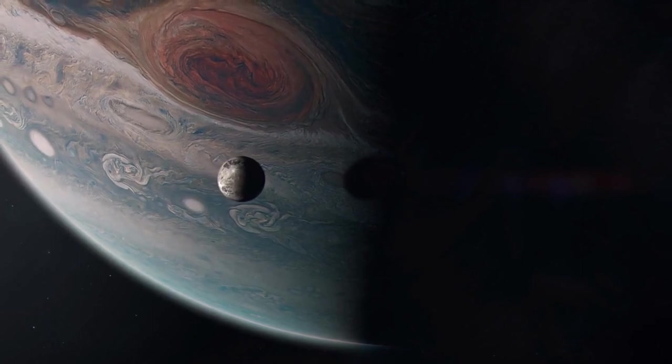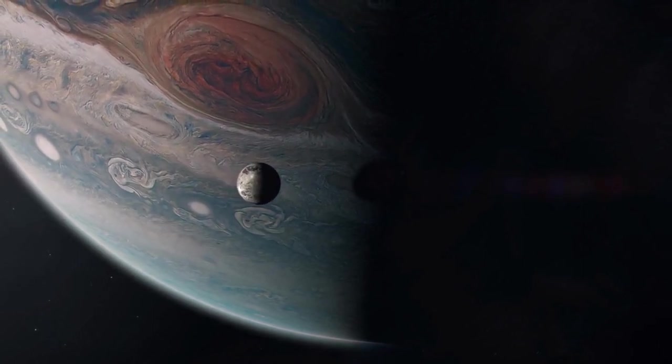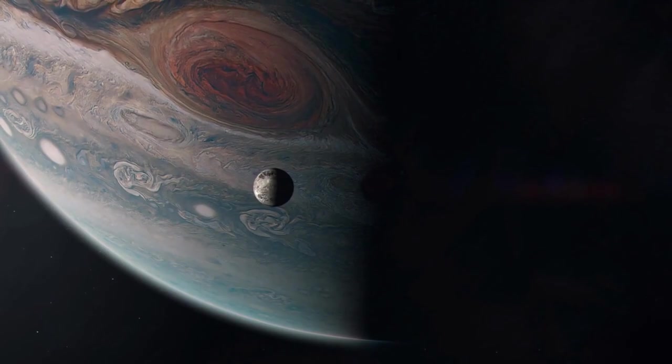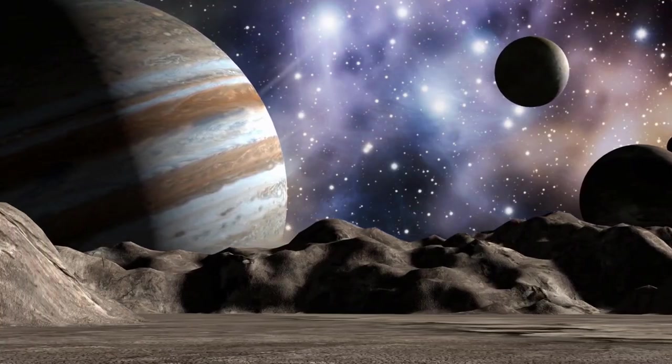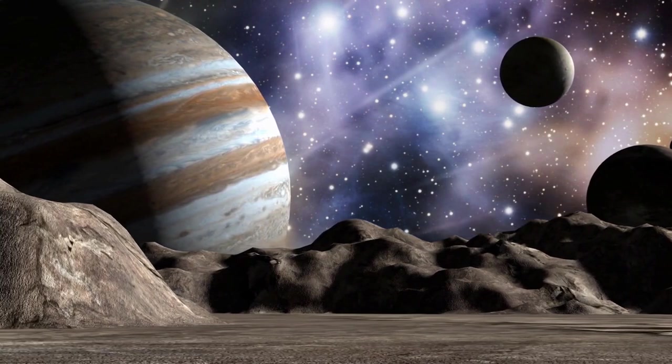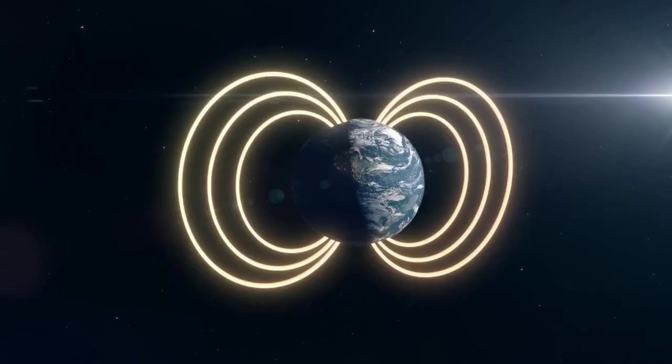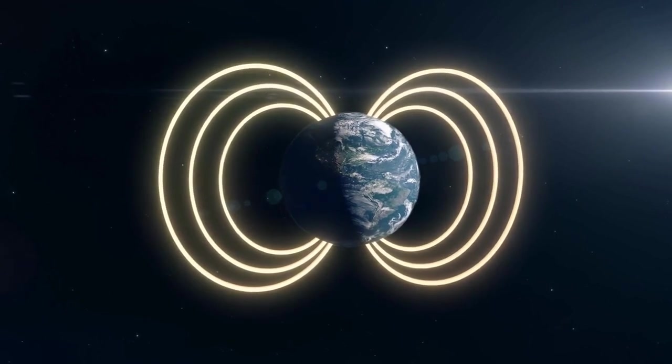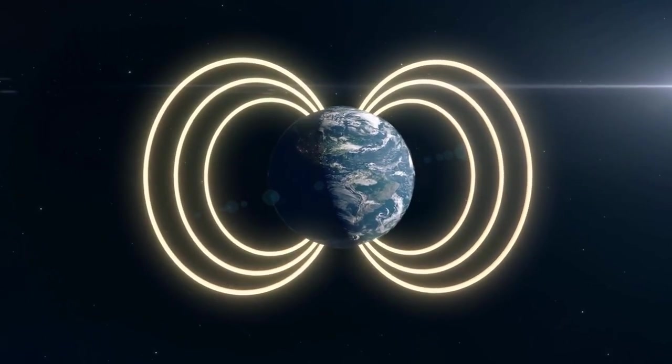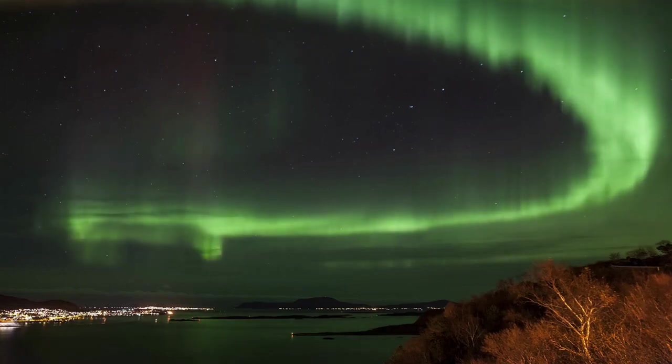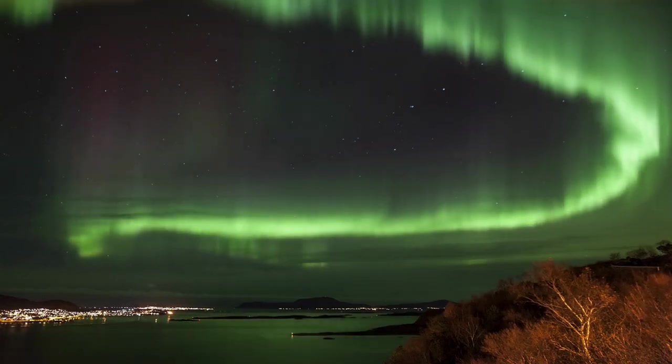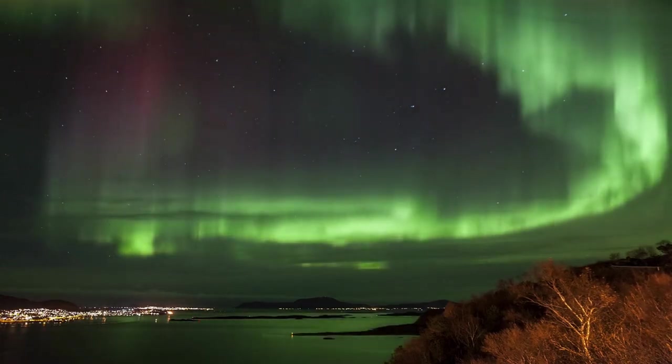Ganymede is the largest moon in our solar system, even bigger than the planet Mercury and the dwarf planet Pluto. There's strong evidence that Ganymede has an underground saltwater ocean that may hold more water than all the water on Earth's surface. Ganymede is the only moon known to have its own magnetic field, something typically found on planets like Earth. The magnetic field causes auroras, bright ribbons of glowing gas, that circle the moon's poles.